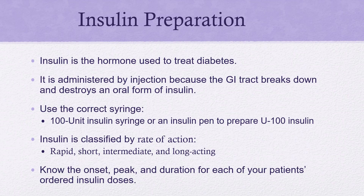Insulin is measured in units — never draw insulin in a syringe that measures milliliters. If your order is for 3 units of insulin, that is a very small dose; if you inadvertently gave 3 mL of insulin you could cause your patient to go into a hypoglycemic crisis. All insulin syringes have an orange top as a reminder that they are for insulin only and are measured in units, not milliliters.